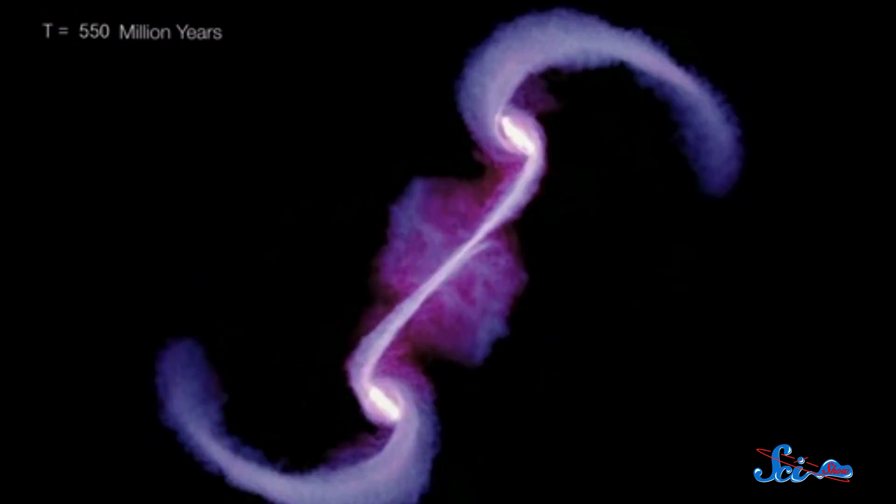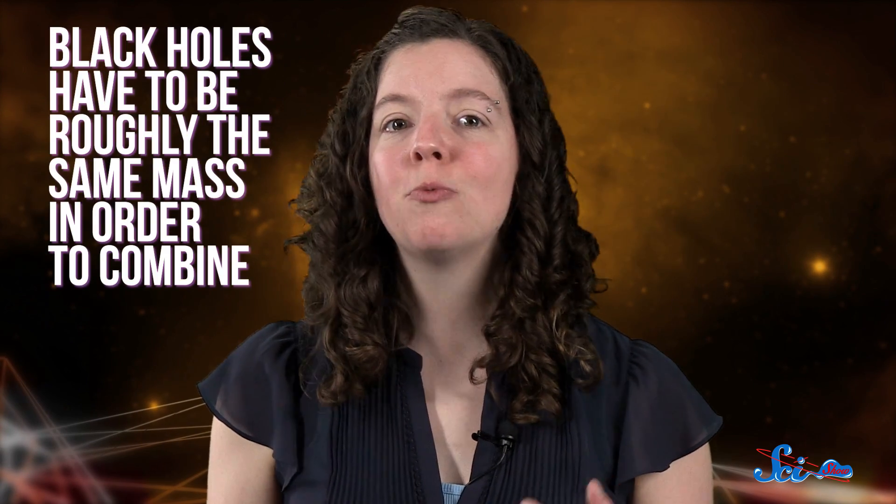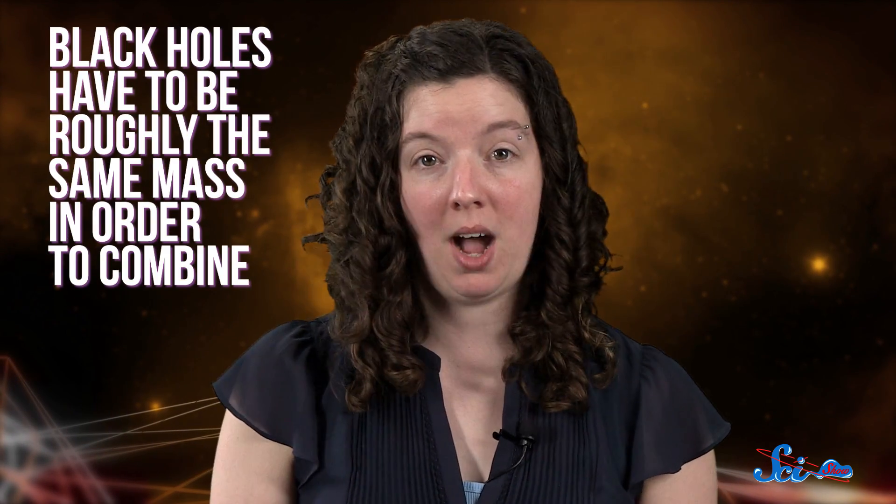So now, physicists are trying to figure out what rules of the universe allowed this black hole to become so huge so fast. One explanation is that a few smaller black holes merged together when their galaxies collided. But that seems unlikely, because black holes have to be roughly the same mass in order to combine.